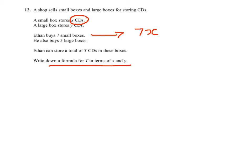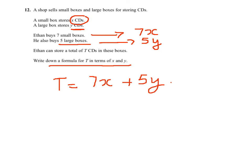He also buys 5 large boxes and each large box stores Y CDs. So the amount of CDs in 5 large boxes will be 5Y. So in total he will have T, the total number of CDs, equals 7X plus 5Y.